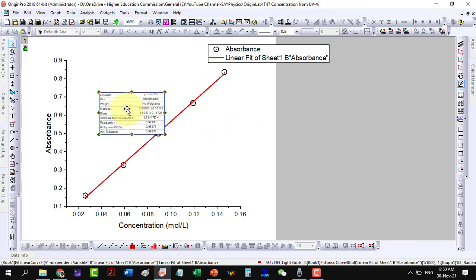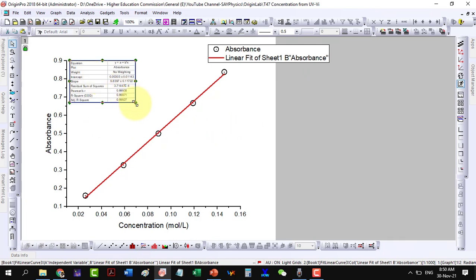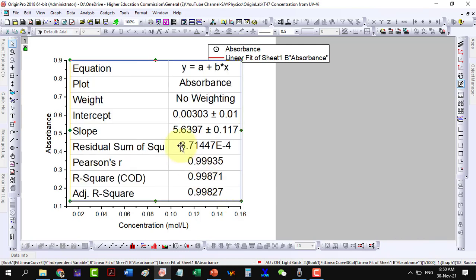This table shows our parameters. Let me enlarge it to become more readable. The very first thing we will have to check here is the adjusted R-square value, which is supposed to be close to 1.